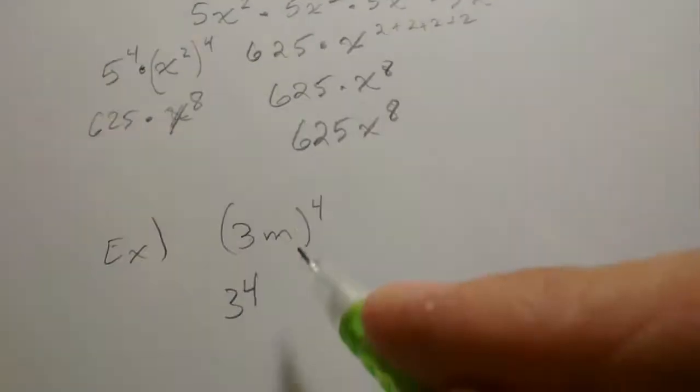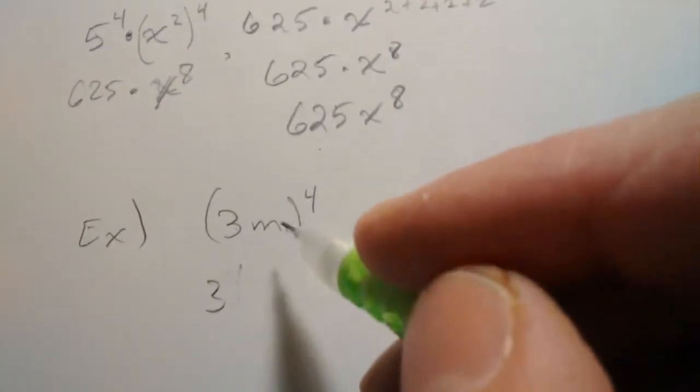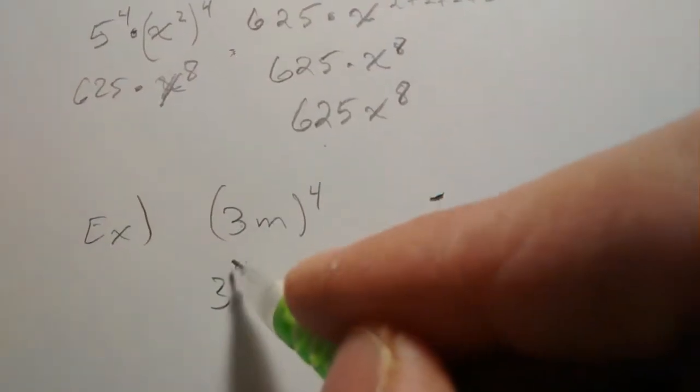So the shortcut version here, that's the next point by the way, is to apply that exponent, that outside one, to both factors here.